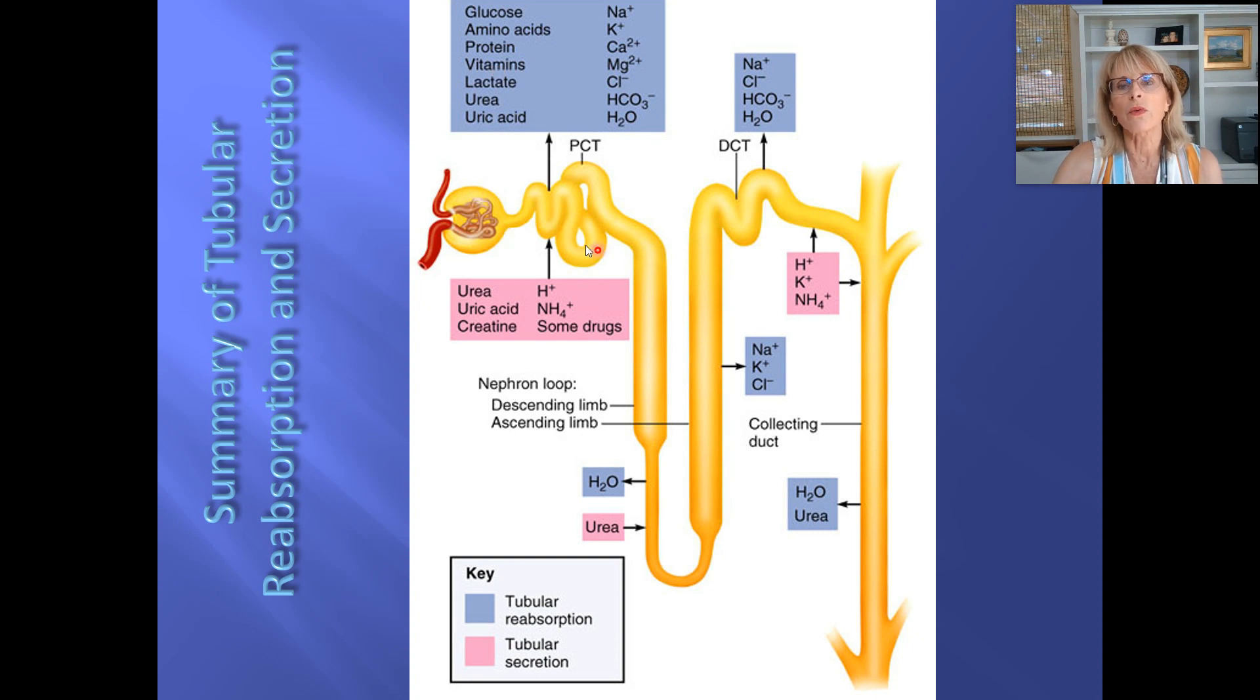So what do we find about the proximal convoluted tubule? If I had to survive with only one part of the nephron, it would be the proximal convoluted tubule, because that's the one that's doing almost everything.